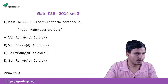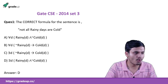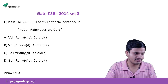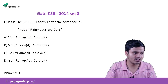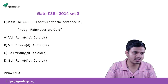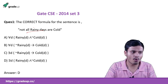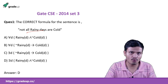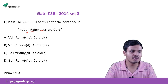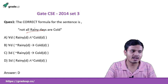The correct formula for the sentence 'not all rainy days are cold' — you can also understand this statement as: there is some rainy day that is not cold, because to make 'for all' false we just need one counter example.